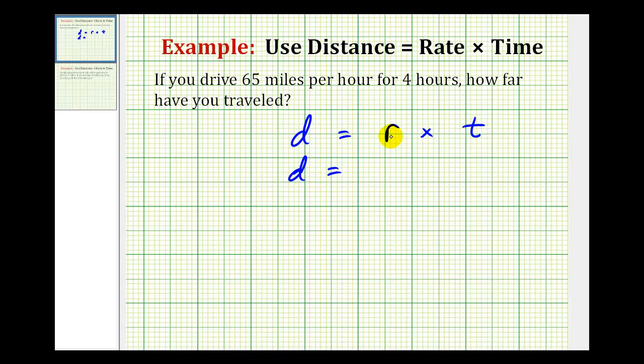So we'd have the distance equals our rate, 65 miles per hour. We'll leave off the units for right now times the time, which is four hours.